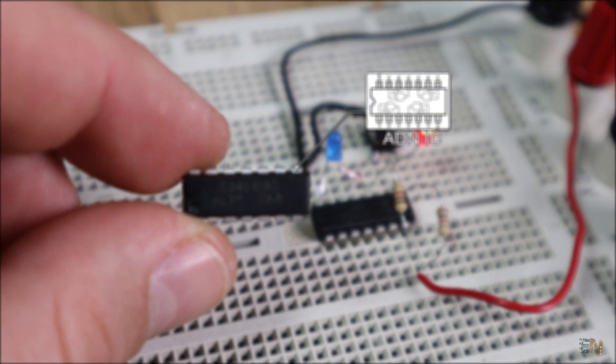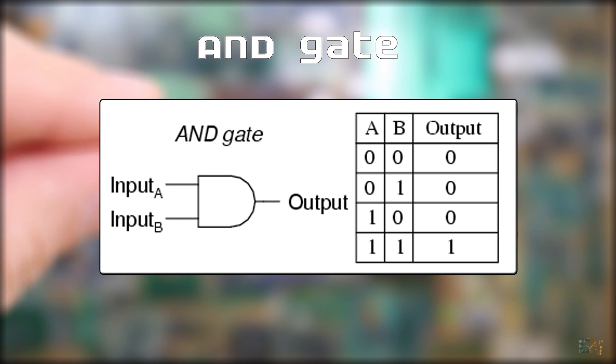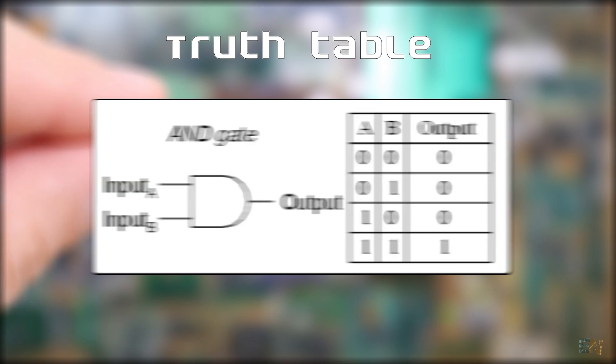Next we have the AND gate and this is the symbol for this module. Now we should learn what a truth table is.